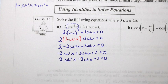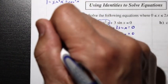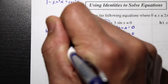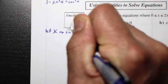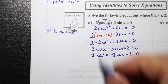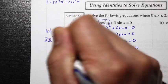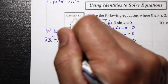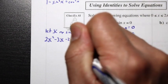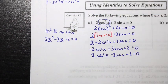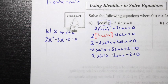This may not be intuitive, so let's let a variable x represent sin x. The equation becomes 2x² - 3x - 2 = 0, and we can think about solving this quadratic equation.